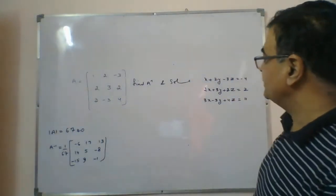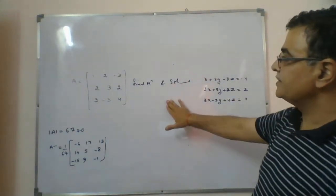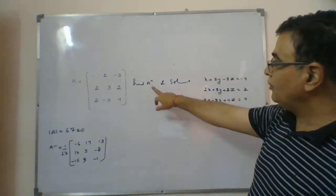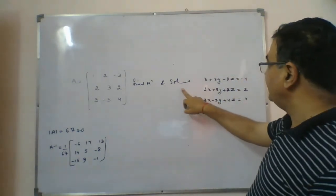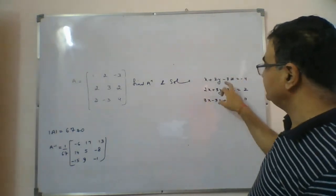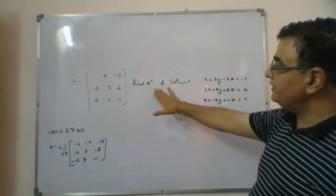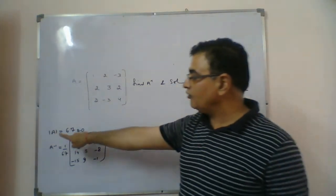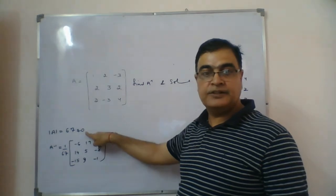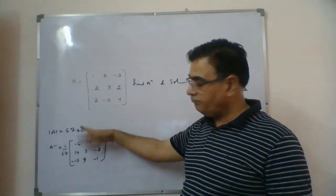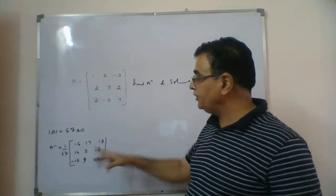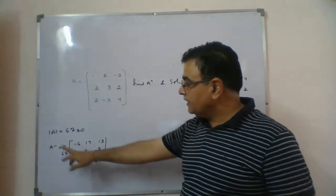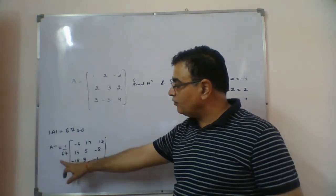Now we are coming to the next question. The question gives matrix A and asks: first, find A inverse, and then solve this system. When they ask for A inverse, the first thing we calculate is the determinant of A, which comes out to be 67. Since it's not 0, the inverse will exist and then we calculate the inverse.